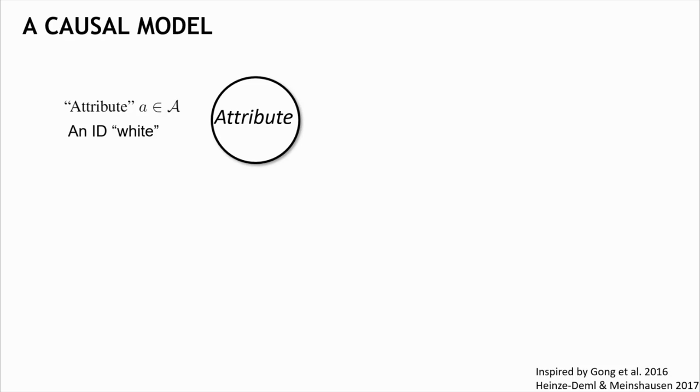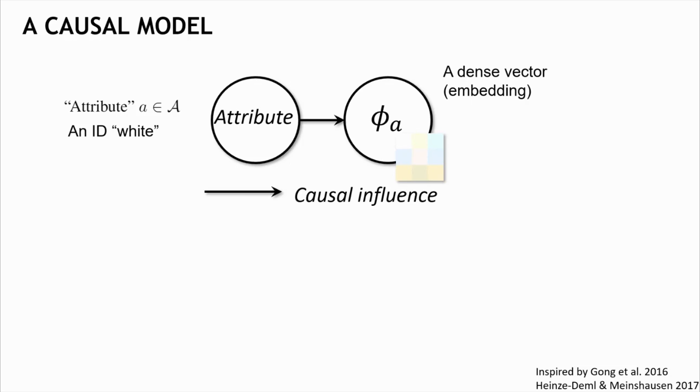And the causal graph that generates images looks exactly like that. There is a variable for the attribute, which is just the identity of the attribute, a categorical variable, let's say white, which maps to some stable representation of how white looks like.